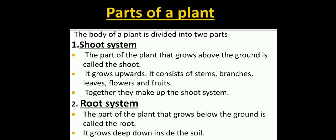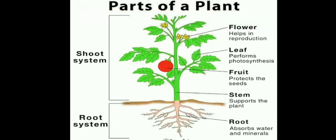Root system. The part of the plant that grows below the ground is called the root. It grows deep down inside the soil. Look at this picture of a full plant. You will observe two main parts: the shoot system and root system. The part which remains under the ground is called the root system, and the part that grows above the ground is called the shoot system. Below the soil we have the root, and above the soil we have main stem, branch, leaf, flower and fruits.